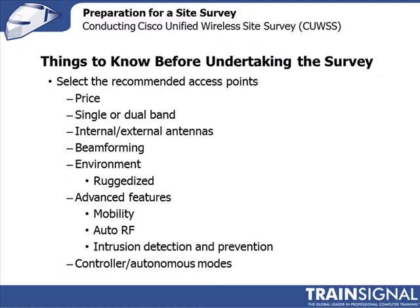Consider what kind of antennas you're planning to use — indoors or outdoors, internal or external. I always carry a few antennas even going out to an office environment — perhaps a wall antenna, an omni, and a corner antenna — just to see coverage using different antenna options. Also consider whether this site would benefit from beamforming. Beamforming is not available on all access points; it forms a narrow beam to get more range and can cover areas like stairwells where you're having trouble getting coverage without deploying another access point.